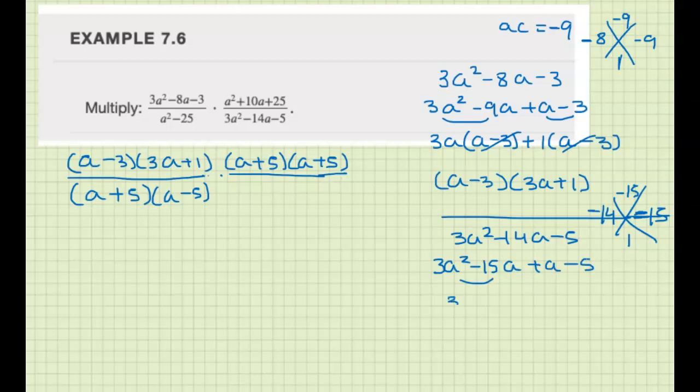From here, factor out 3a, we get a minus 5. From here, factor out 1, we get a minus 5. Then factor out the a minus 5, and we get 3a plus 1. So I'm going to write that here.